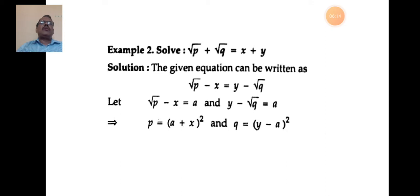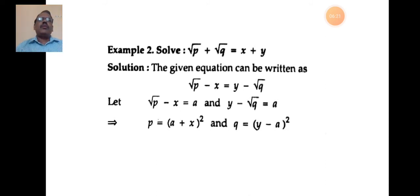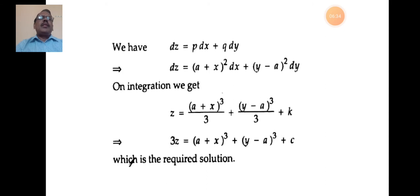So p = (a + x)² and q = (y - a)². Substituting in dz = p dx + q dy: dz = (a + x)² dx + (y - a)² dy. On integrating: z = (a + x)³/3 + (y - a)³/3 + k. Multiplying by 3: 3z = (a + x)³ + (y - a)³ + c. This is the required solution of the given differential equation.